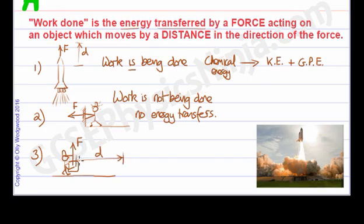The postman is walking a distance d on level ground. Let's say that he or she moves that distance. But the problem here is that the distance is not in the direction of the force. In fact, they're completely unrelated because they're at 90 degrees. And that means that no work is being done. Work is not being done. There are no energy transfers.